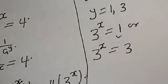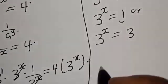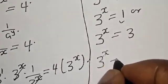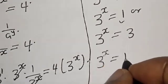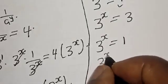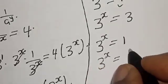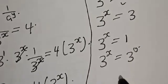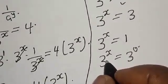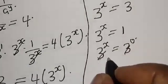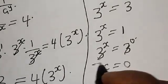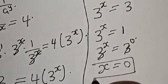Let's work with the first case: 3 raised to power x equals 1. We can write this as 3 raised to power x equals 3 raised to power 0. They have the same base, so we cancel it. Therefore x is equal to 0.